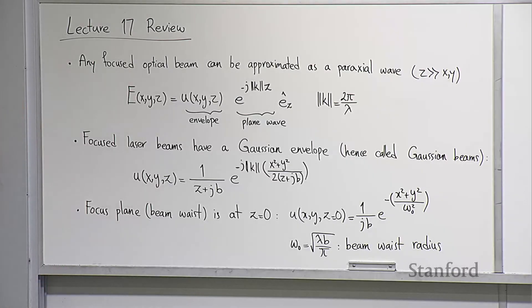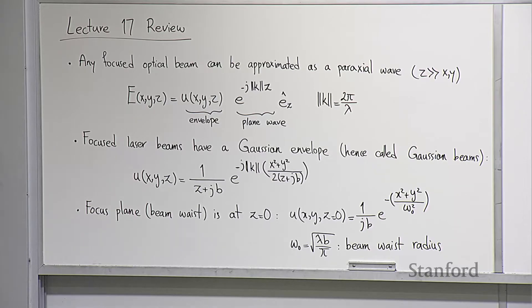Let's start with a quick review of last lecture. Last time we talked about lasers — specifically the lasing principle — and then we looked at solid semiconductor laser diodes, which are the type of lasers used in LiDARs. We then started talking about the characteristics of the beams of light emitted from lasers.